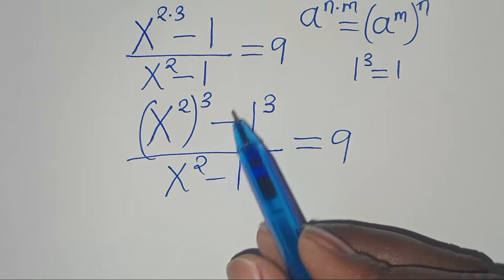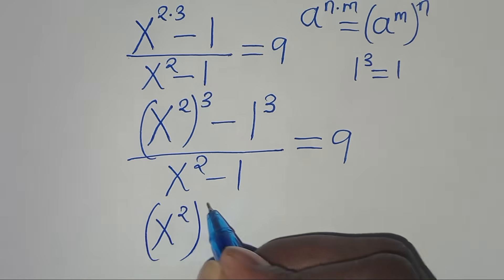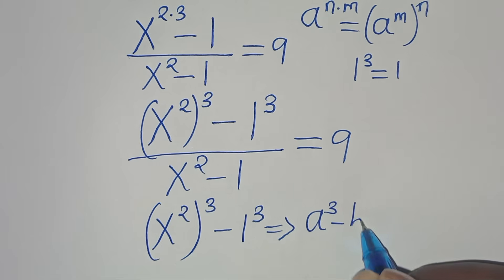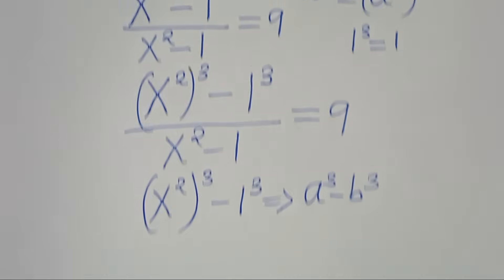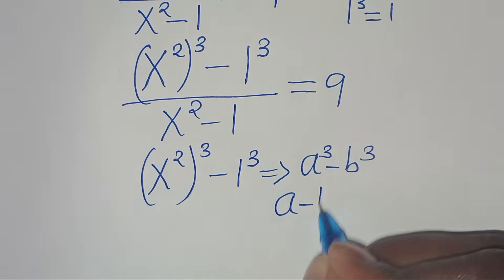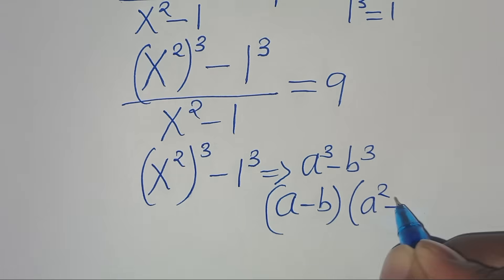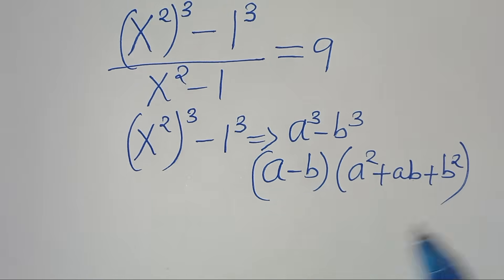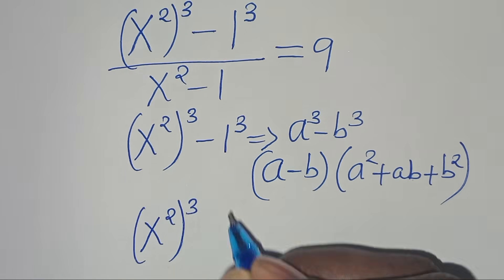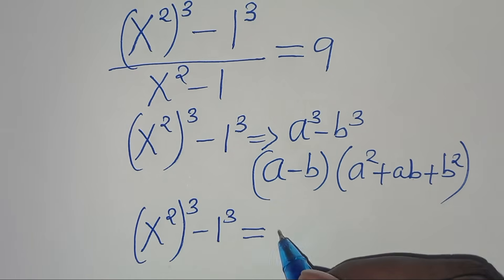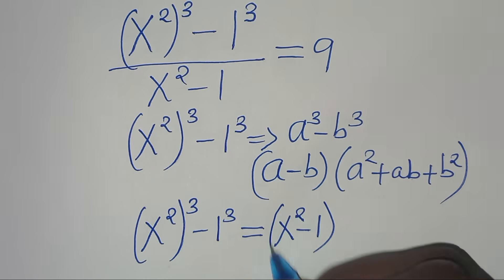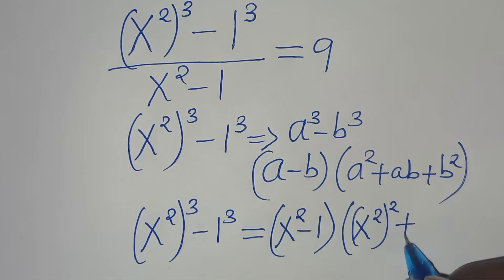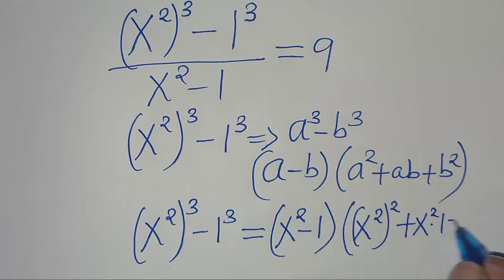Now if we check the numerator, x to the power of 2 raised to the power of 3 minus 1 to the power of 3 is in the form of a cubed minus b cubed — the difference of two cubes — which factors as (a minus b)(a squared plus a times b plus b squared). Applying this identity, x squared cubed minus 1 cubed equals (x squared minus 1) times (x to the power of 4 plus x squared times 1 plus 1 squared).